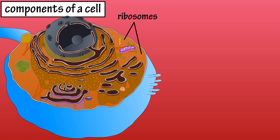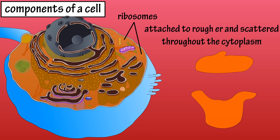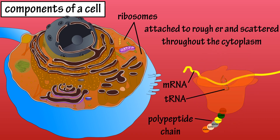Ribosomes can be found attached to the rough ER or scattered freely throughout the cytoplasm. They are a non-membranous structure comprised of large and small subunits. Ribosomes are protein factories. The two subunits come together as transfer RNA brings amino acids to the ribosome, and messenger RNA provides the code of how to assemble the amino acids into a polypeptide chain.